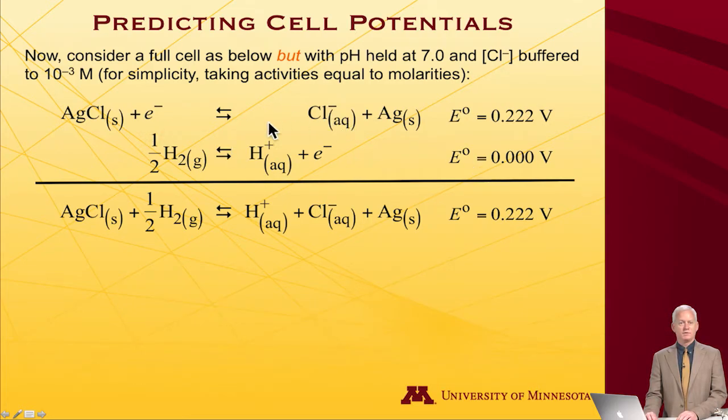Let's consider a full cell, one that we've seen before actually. The full cell is silver chloride, an insoluble salt in solid form, plus one half hydrogen gas in equilibrium with protons, chloride ions both in aqueous solution, and solid silver. The standard potentials which we could look up in a table are 0.222 and by definition zero for these two half cells. So the net standard potential for this full cell is 0.222 volts.